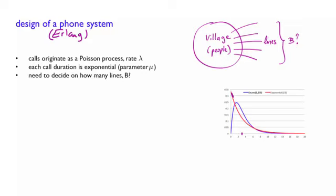All right, so let's try now to come up with a model so that we can decide how many lines B do we want to set up. The Poisson process runs in continuous time, and call durations being exponential random variables are also continuous random variables. So it seems that we are in a continuous time universe.